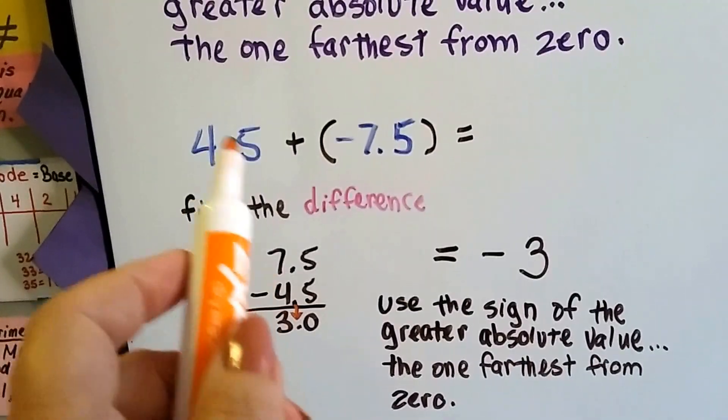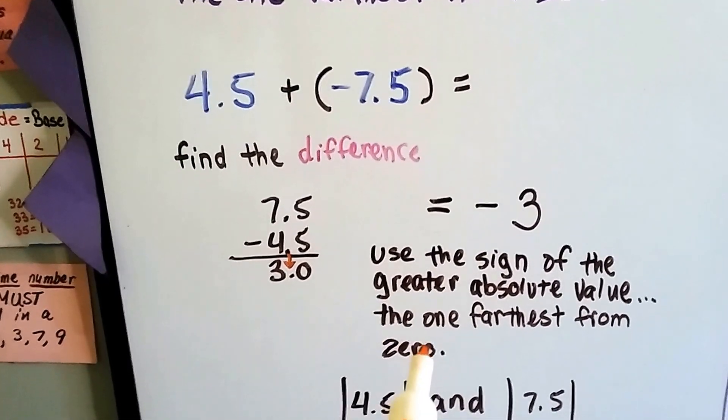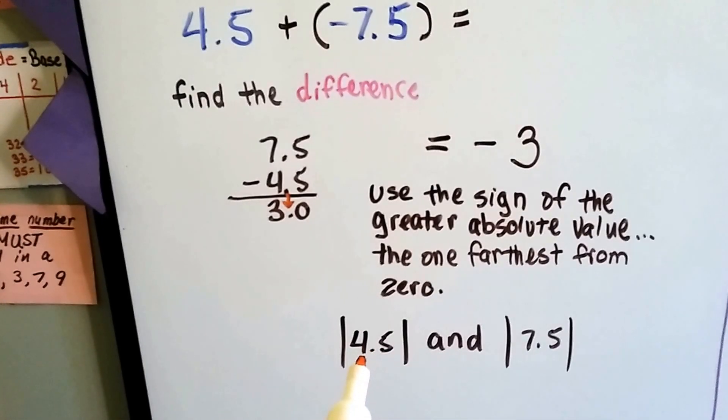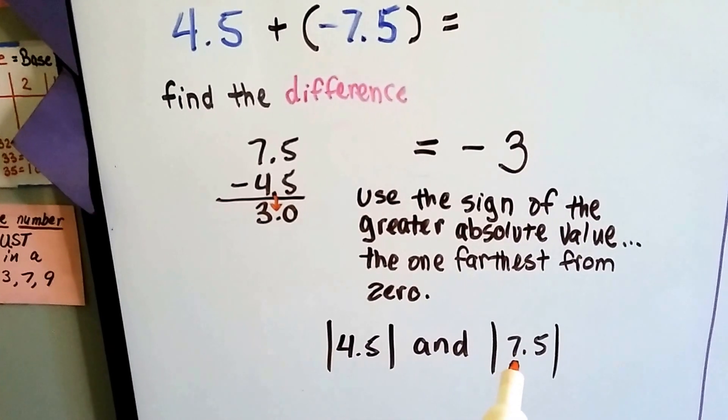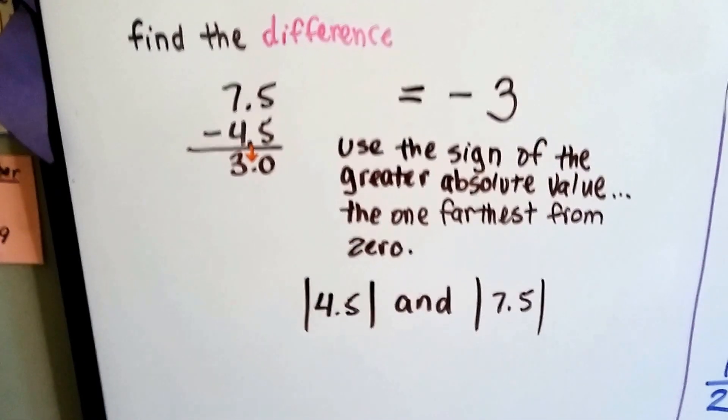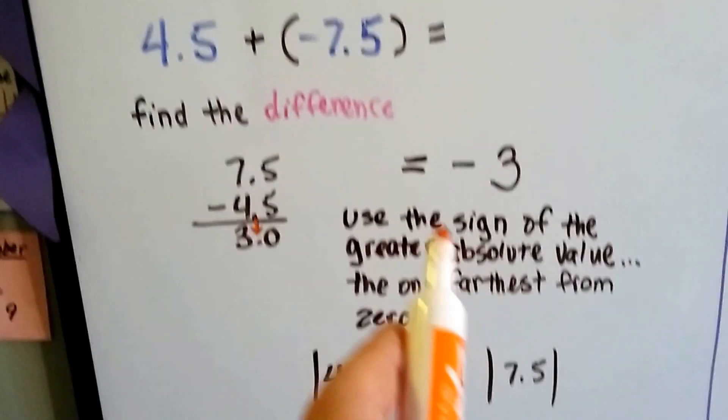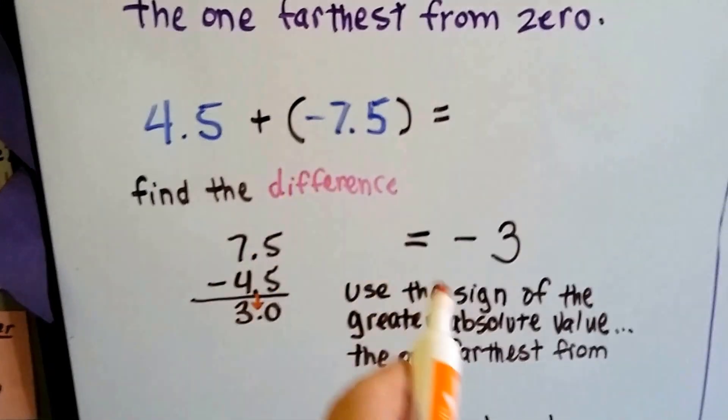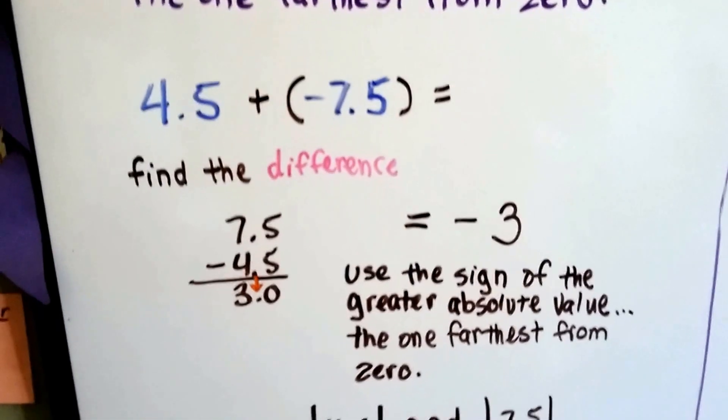And, because the signs were different, we're going to take the sign of the one with the greater absolute value. The absolute value of positive 4.5 is 4.5, and the absolute value of negative 7.5 is 7.5. It's just how far away it is from zero, how many hops. So which one's bigger? Well, the 7.5 is. And, because it's a negative in the equation, we give it to our answer, our sum, as a negative 3.